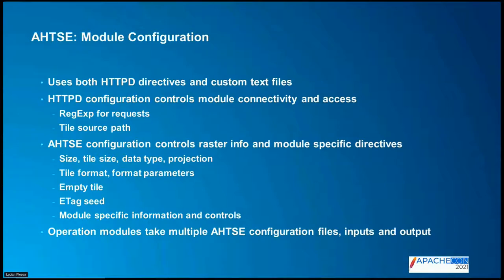Operation modules take multiple configurations — both an input and an output. The output is how the module presents tiles to the user; the inputs are where the source data comes from. Both contain raster info, and in some cases the raster can change — so it tracks how the raster looks on input versus output, and figures out the geometry transformation based on that.